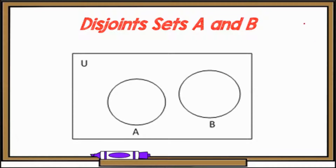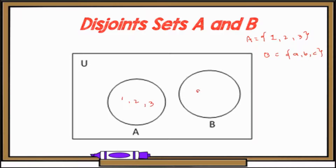This is an example of disjoint sets. If you notice, the two circles do not overlap because they do not have any common elements. For example, set A is the set of numbers 1, 2, 3, while set B is the set containing the letters A, B, and C. They have no common elements, so they do not overlap and do not share any elements.